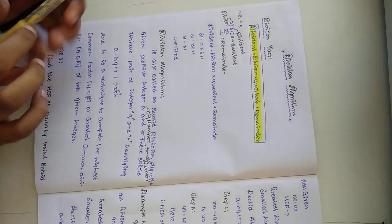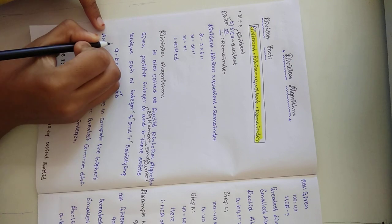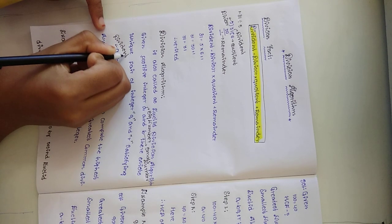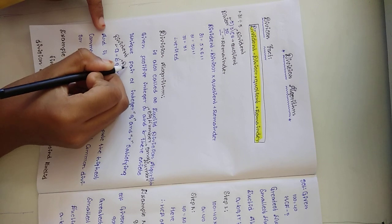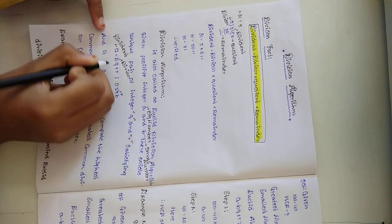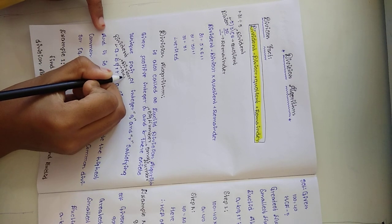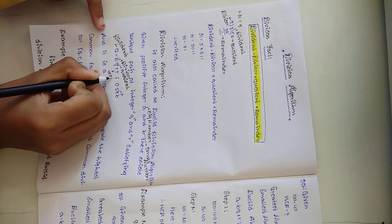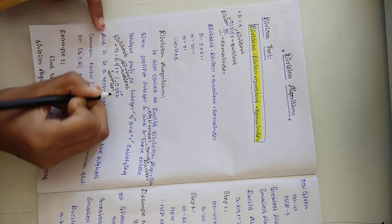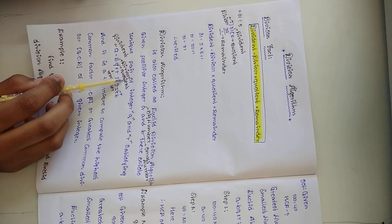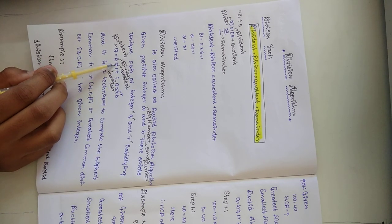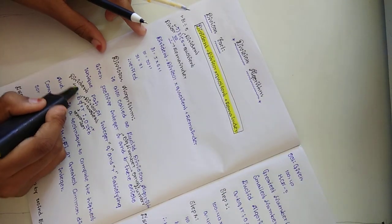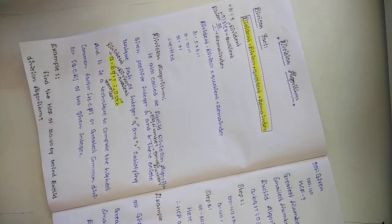The condition is 0 less than or equal to R less than B. Here A is the dividend, B is the divisor, Q is the quotient, and R is the remainder. The equation is A equals BQ plus R, and this condition is very, very important — we should understand that.